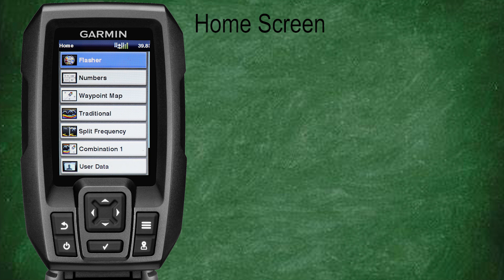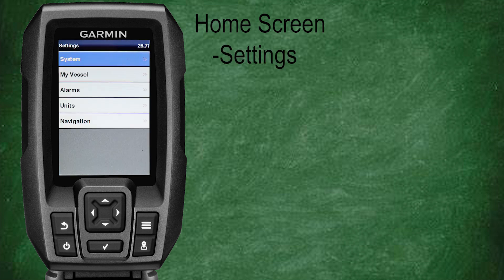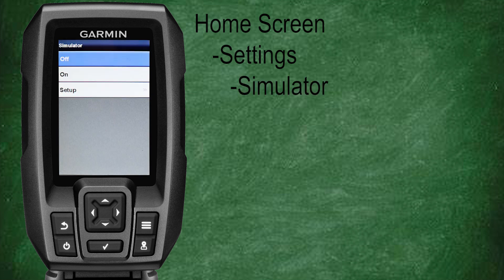Let's start this class at the home screen. Scroll down and select Settings, then select System and scroll down to and select Simulator. Here we're going to have our simulator options: off, on, or setup. Let's scroll down to and select Setup.